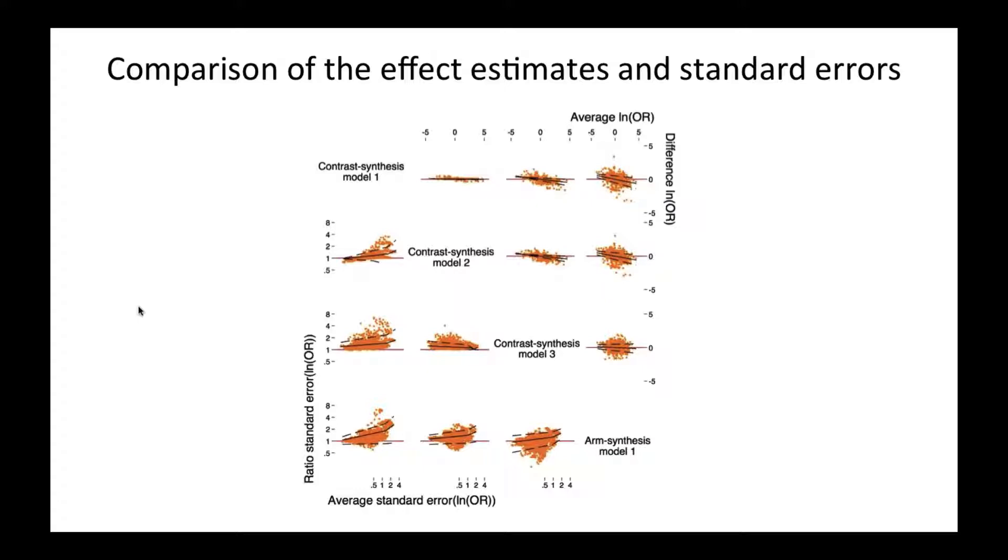When we compare contrast synthesis models 1 and 2, we see that as the average standard error increases, the difference increases. In this case, it's telling you that contrast synthesis model 1 has larger standard errors than model 2. We see similar patterns with contrast synthesis model 3. With arm synthesis model 1 compared to those contrast synthesis models, we see that there's quite a bit of variability in the standard errors.